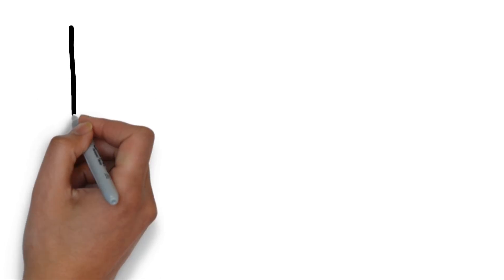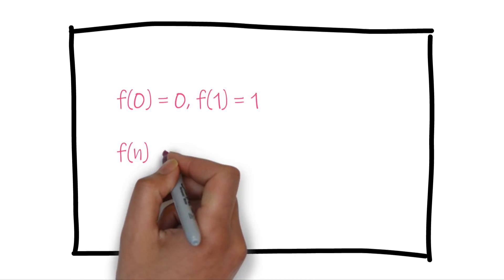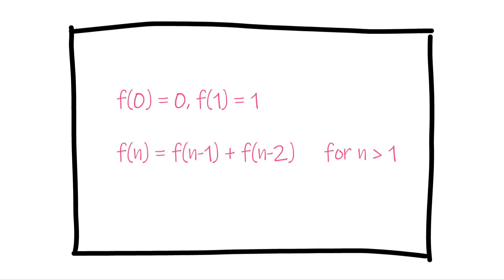Also by looking at the mathematical definition of the Fibonacci series, we will figure out easily that it is a recursive problem. Fibonacci of 0 is 0, Fibonacci of 1 is 1. Otherwise, Fibonacci of n is the sum of the Fibonacci of n-1 and Fibonacci of n-2.